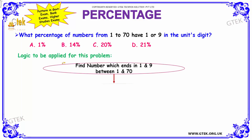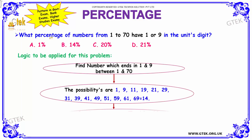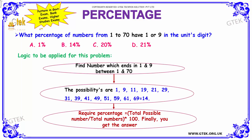Next example. This is also important as it has appeared in government, bank, and higher studies exams. We have to find the percentage of numbers from 1 to 70 that has 1 or 9 in its units digit.